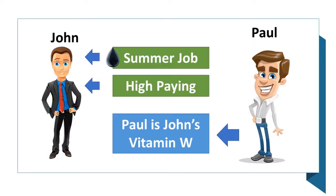Let us kick things off with a story. John is an intern at an oil company. He got this internship as a summer job, and it is extremely high paying compared to other opportunities. John could not have gotten this internship if it weren't for Paul, who is John's vitamin W — Lebanese slang for Wasta — which means a connection that has the power to get you hired. In other words, a form of corruption.